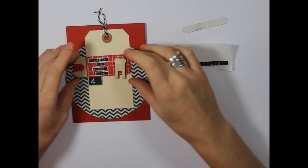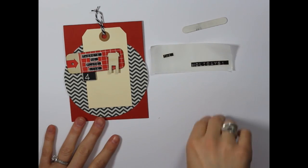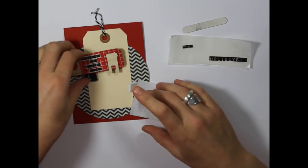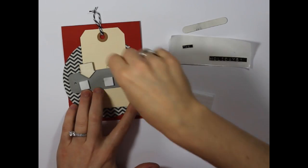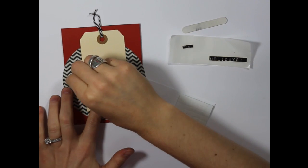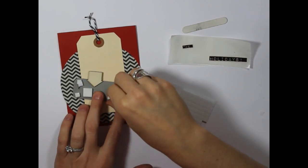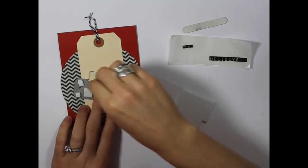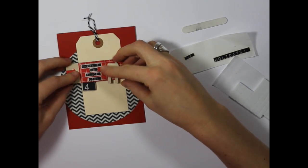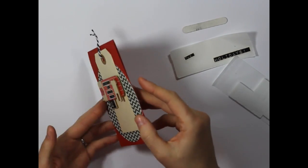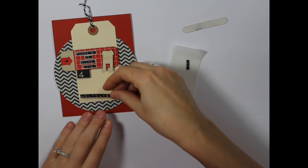And now we're going to adhere this portion of the sentiment onto our tag. So I have some foam squares here. I'm just going to place those on the back of our little tag. So that gives it some fun dimension. And then we're just going to finish up our sentiment here.